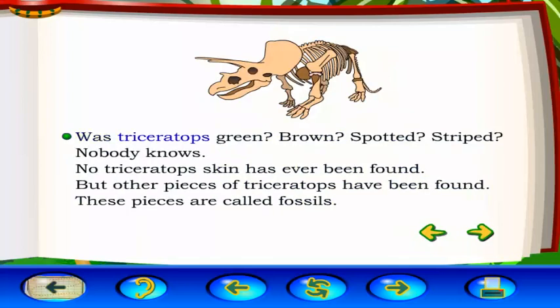Was Triceratops green, brown, spotted, striped? Nobody knows. No Triceratops skin has ever been found, but other pieces of Triceratops have been found. These pieces are called fossils.